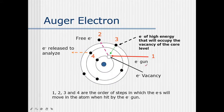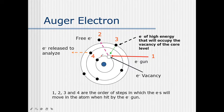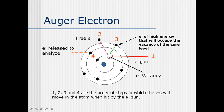An electron gun shoots electrons to the core level of the atomic orbital. The core electron gets released — that is my tube — and a vacancy is created. An electron of higher energy then comes and occupies this vacancy. Once it occupies this vacancy, some energy is released. This energy is captured by the next electron, which is then released out.